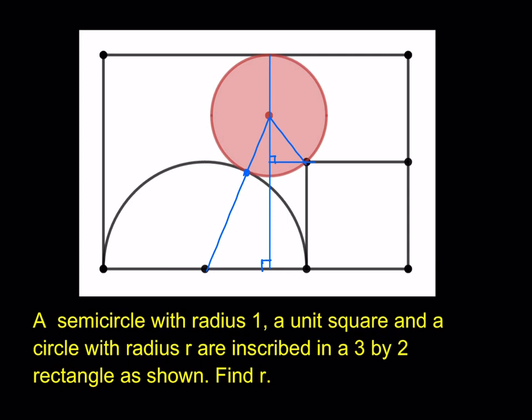Let's mark some lengths. The radius of the circle is R, so we have R, R, and R marked. We know the semicircle has radius 1, so that's 1 and 1. The unit square gives us sides of 1 and 1. We're not going to use all of these lengths, but just to note them.